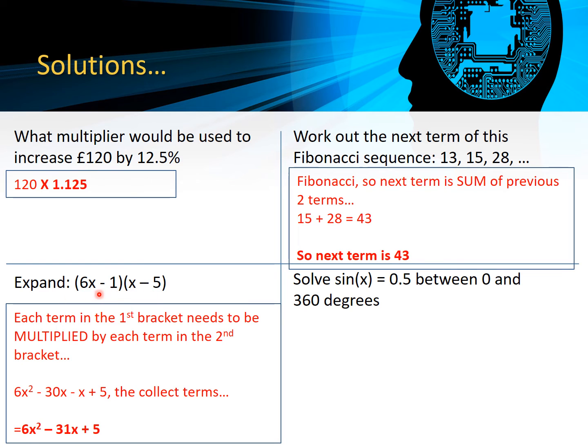So 6x multiplied by x gives me 6x², 6x multiplied by -5 gives me -30x, -1 times x is -x, and -1 times -5 is +5. Then we collect the two middle terms together, giving us this solution down here: 6x² - 31x + 5.